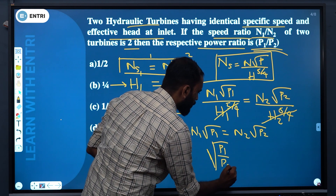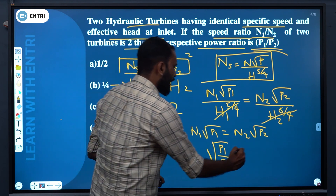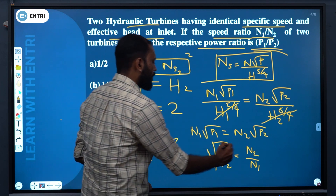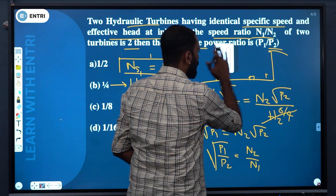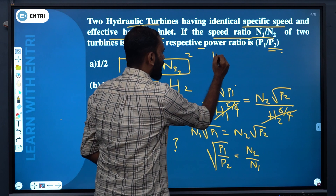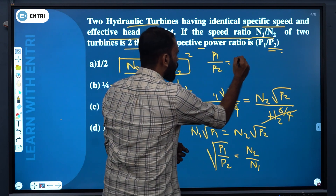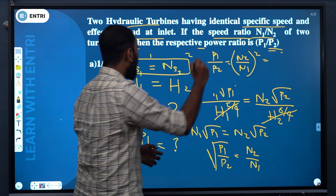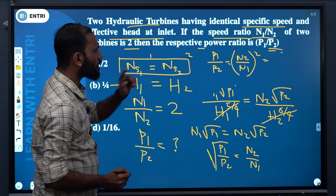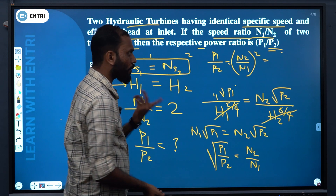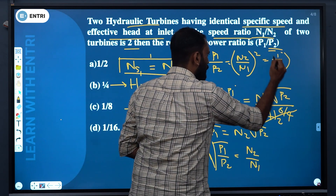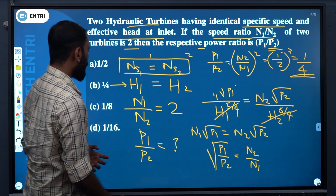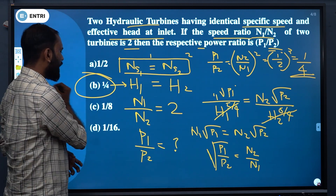P1 by P2 is equal to N2 by N1. So, P1 by P2 is equal to N2 by N1, the whole square. N1 by N2 is given as 1 by 2. So, N2 by N1 the whole square gives 1 by 4. The answer — power ratio — is given by option B: 1 by 4.